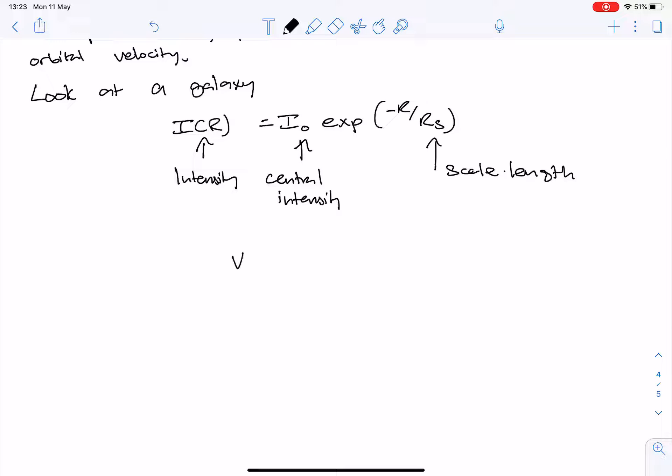And what that means is that you write v is equal to the square root of GM as a function of r over r. And so this doesn't necessarily go down if M of r is increasing faster than r.